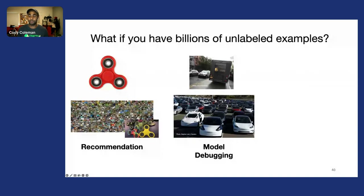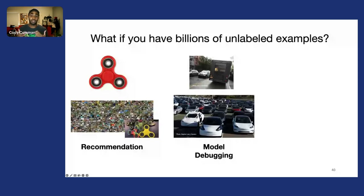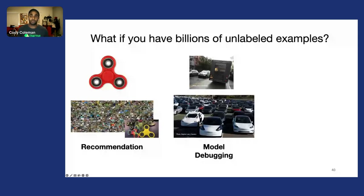For example, in working with folks in autonomous vehicles, they have this problem when trying to debug a model. Imagine you're an autonomous vehicle company with a fleet of vehicles and your car gets stuck behind delivery trucks because it can't tell a delivery truck from a normal truck. You'd want to go find data for delivery trucks to build a classifier and plan around them.